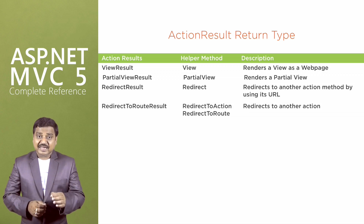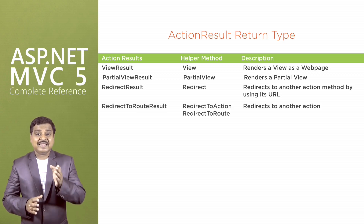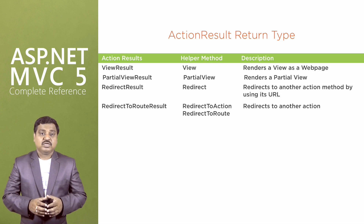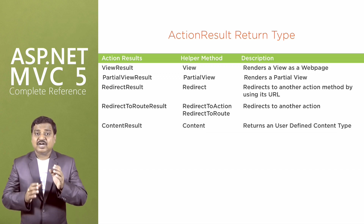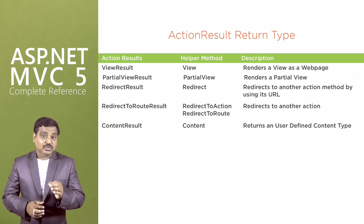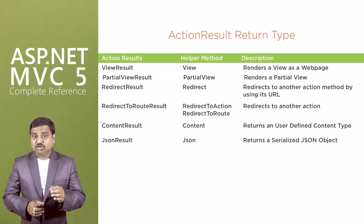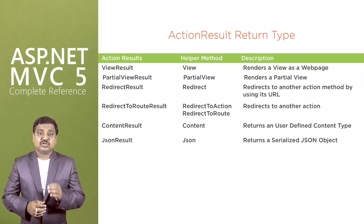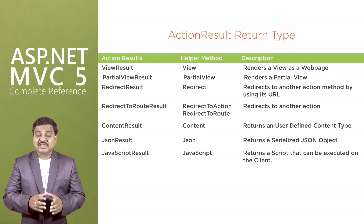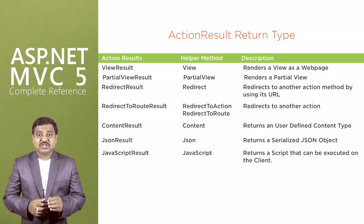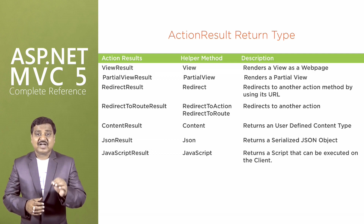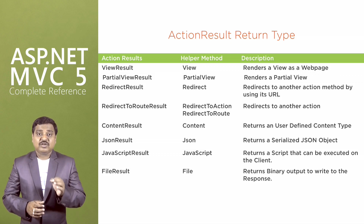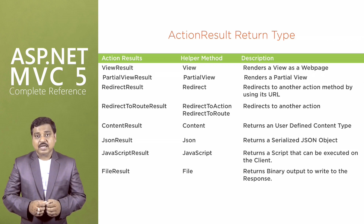Redirect to route result is used to redirect to another action method using either redirect to action or redirect to route. Content result type is used to return a user-defined content type using the content helper method. JSON result is used to serialize a JSON object and returns its value using the JSON helper method. JavaScript result is used to return a script that can be executed on the client side using the JavaScript helper method. File result is used to return a binary output to write to the response using the file helper method.